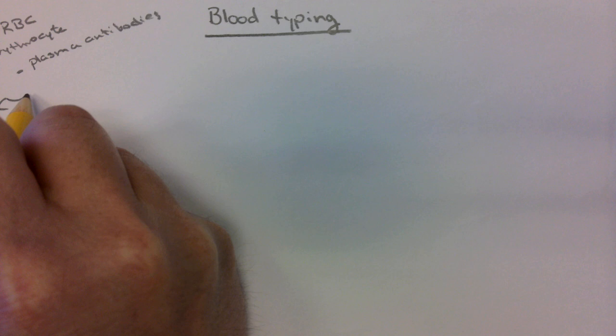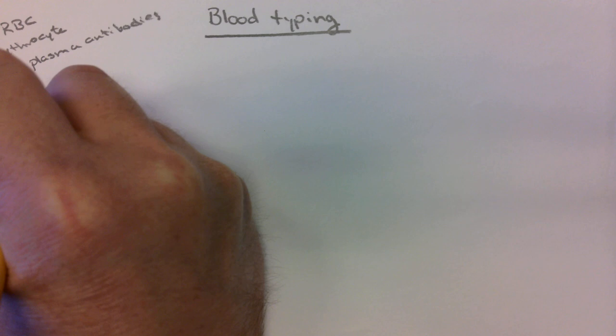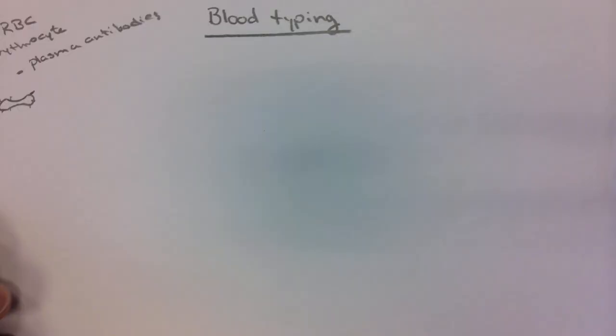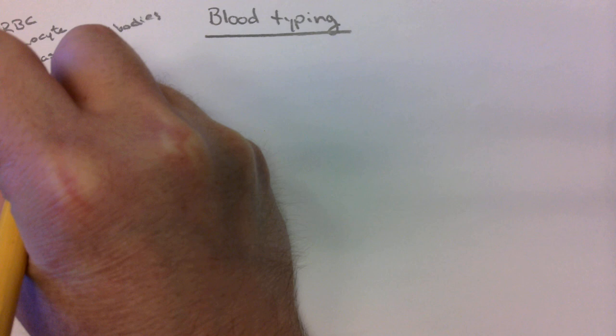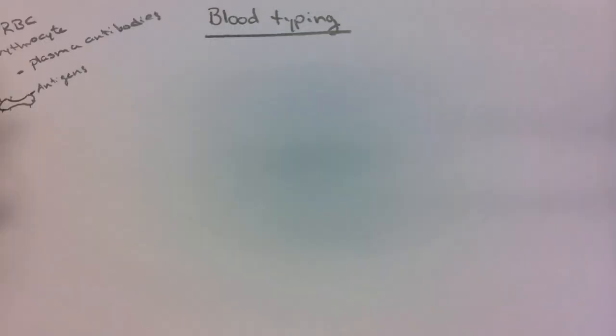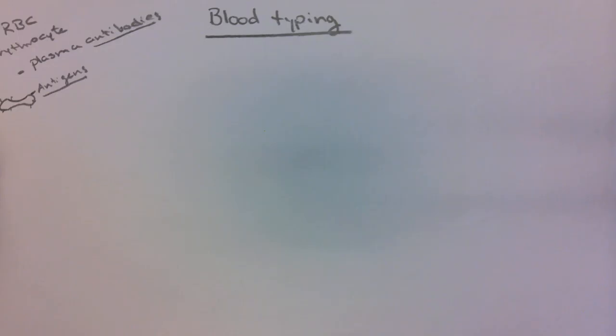On the red blood cell, which is a biconcave disc that increases surface area, there are these little protein spikes that stick out. These are glycoproteins — these little objects that stick out are known as antigens. Antibodies, antigens — I want to make sure you keep these separate. One's in the plasma, one's on the cell.